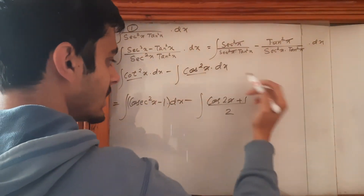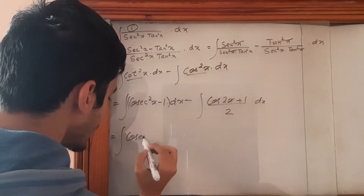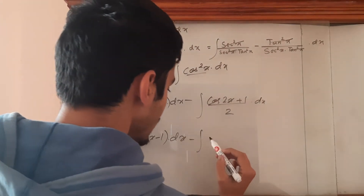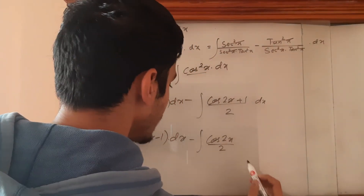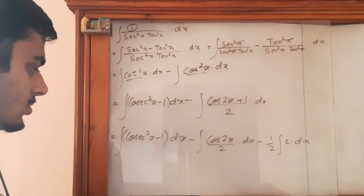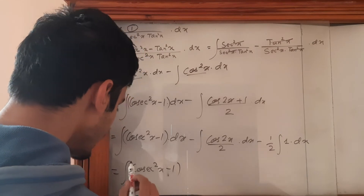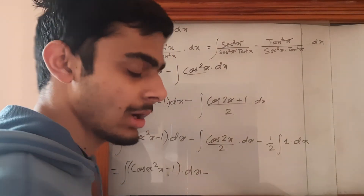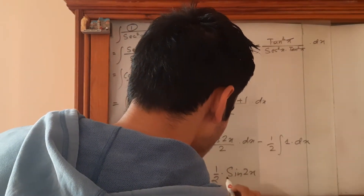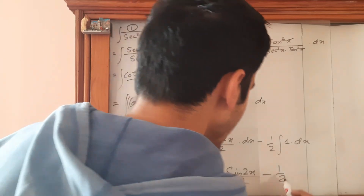Let's integrate the second part first. Separating the integrals, we get minus the integral of cos 2x upon 2 dx minus the integral of 1 upon 2 dx. The 1 upon 2 comes outside, giving 1 upon 2 times sin 2x upon 2, minus 1 upon 2 times x.